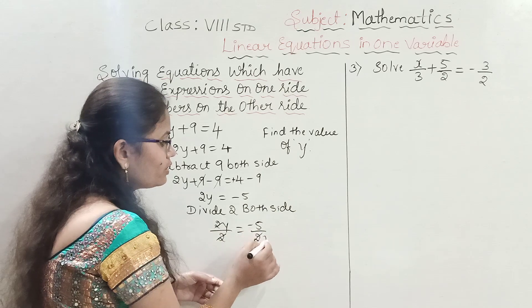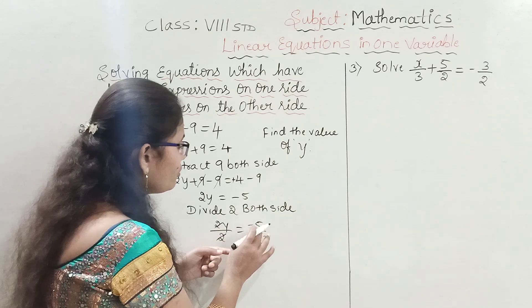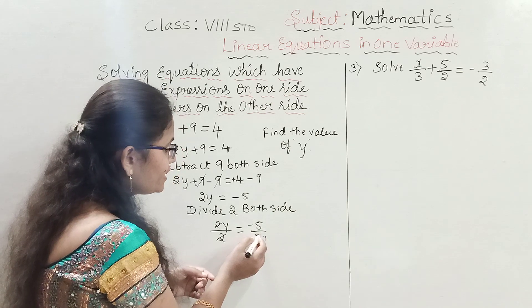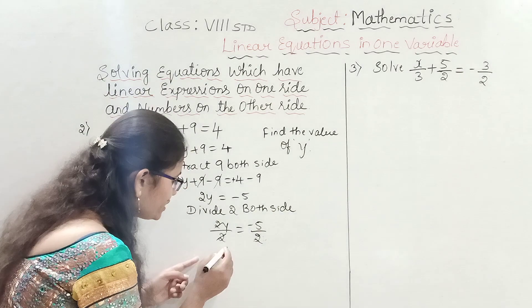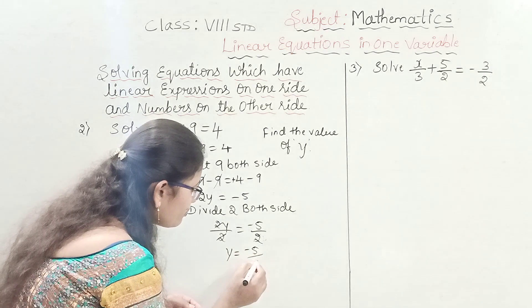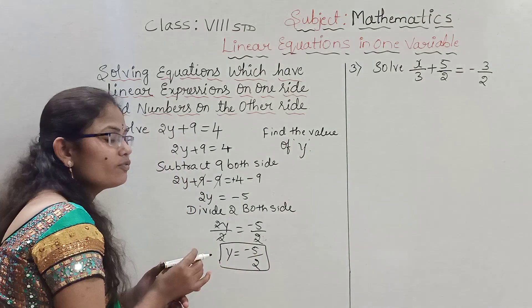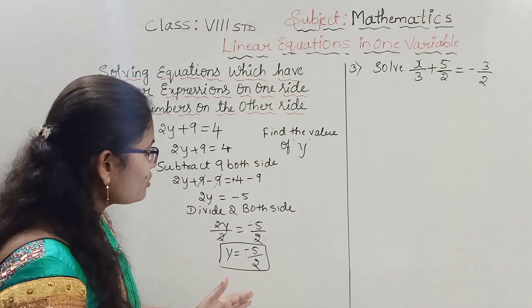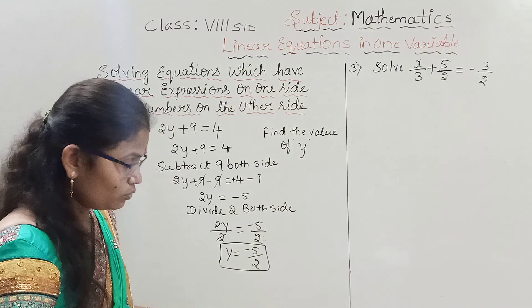The 2's cancel on the left. On the right, minus 5 divided by 2 cannot be simplified further, so we keep it as is. Therefore y equals minus 5 by 2. That is the solution.